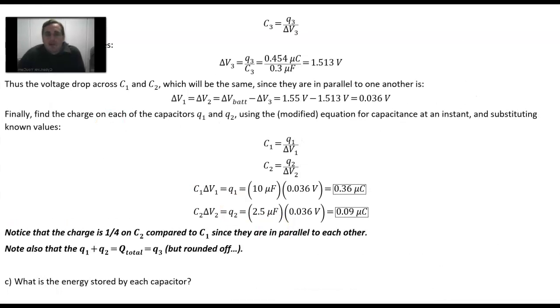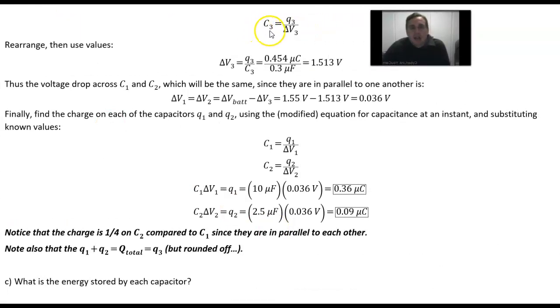We say capacitor 3 is q_3 over delta v_3. Let's rearrange to get delta v_3. So that's q_3 over c_3. The micro prefix goes away. So 0.454 over 0.3 gives about 1.513 volts. Notice that's smaller than the voltage of the battery, which it better be, because otherwise we made a mistake, because we can't overuse the voltage that came from the battery.